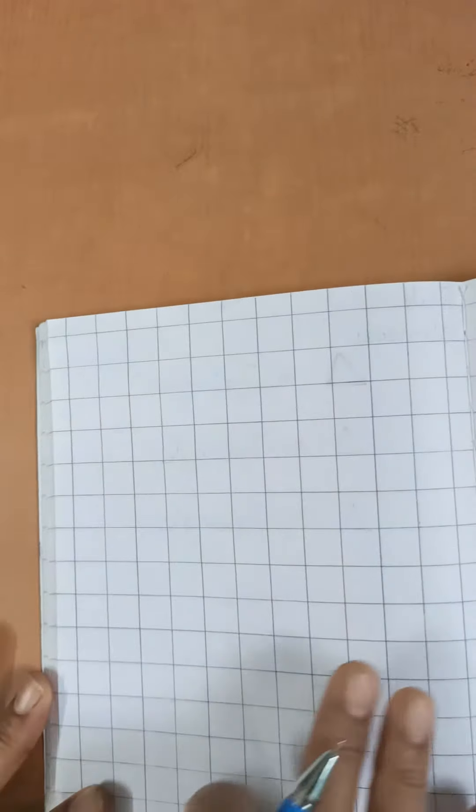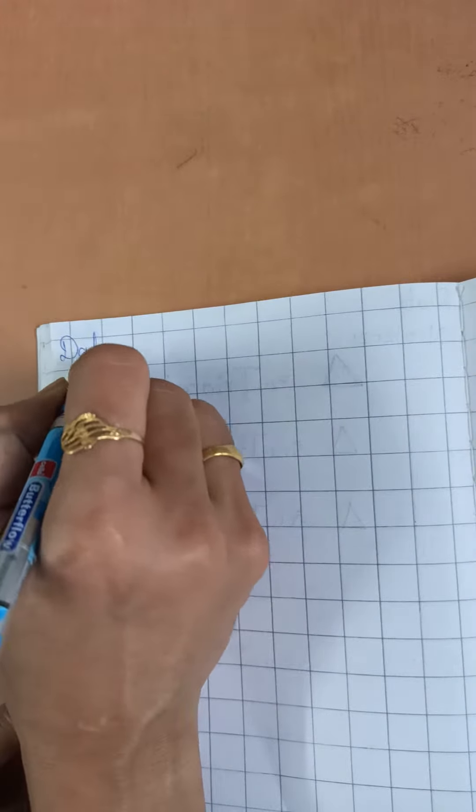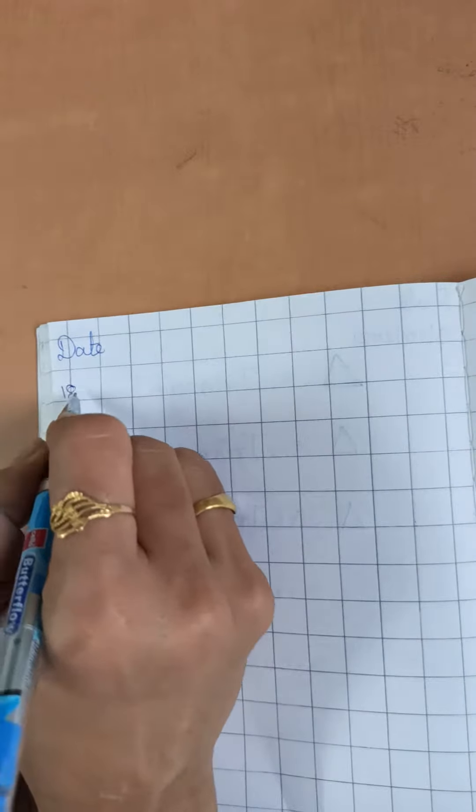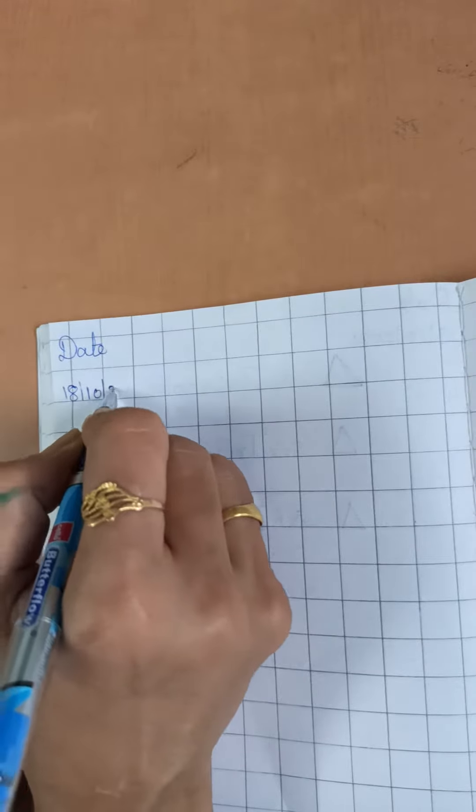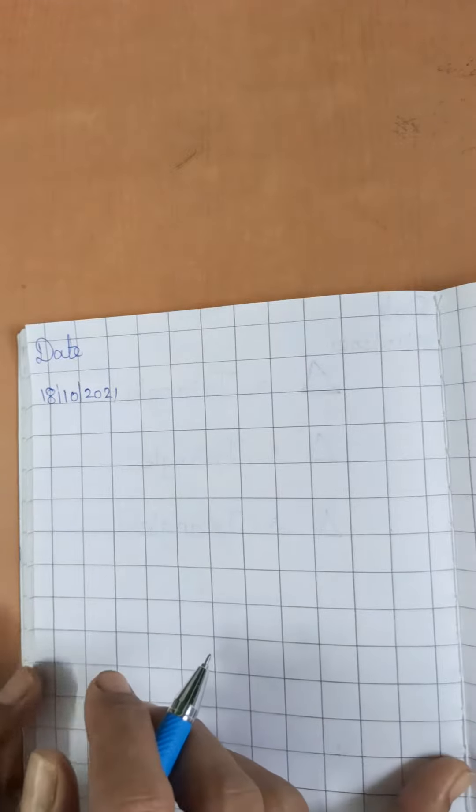Today we are going to learn shape, triangle shape. So, let us start with today's date. Today's date is 18th August, turning line 20, 21. Let us start.